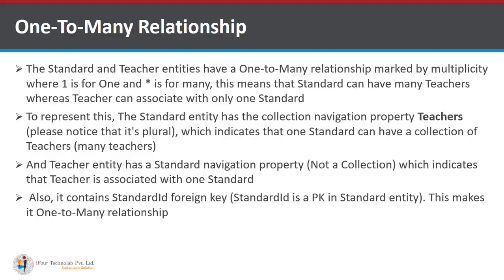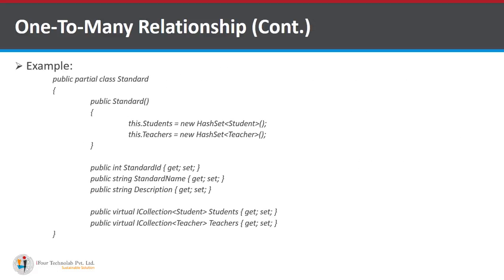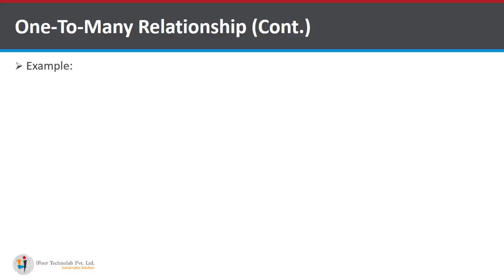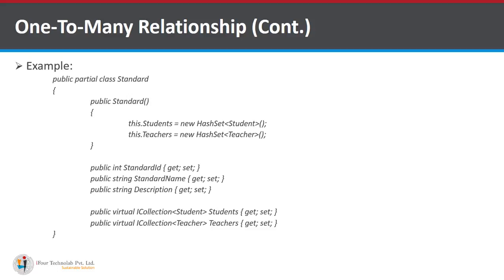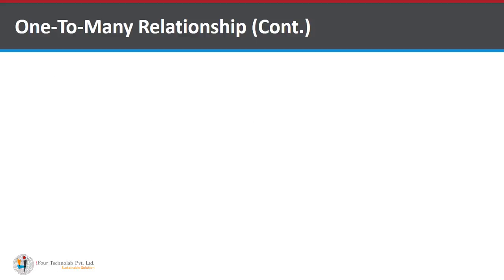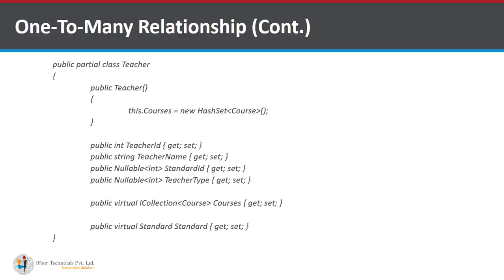The Teacher entity has a Standard navigation property that is not a collection, indicating a Teacher is associated with one Standard. It also contains a StandardID foreign key, making it a one-to-many relationship. In the example, public partial class Standard has a constructor, and contains a virtual collection of Students as well as a virtual collection of Teachers. In the Teacher class there is a virtual collection of Courses and a virtual reference to Standard.